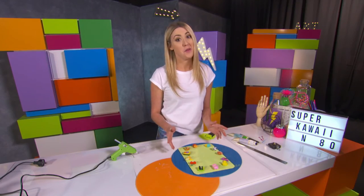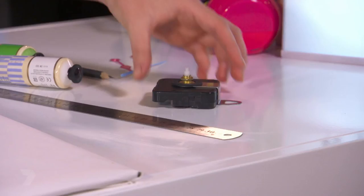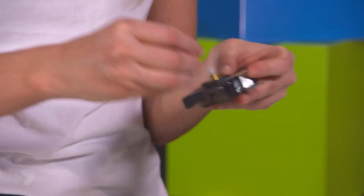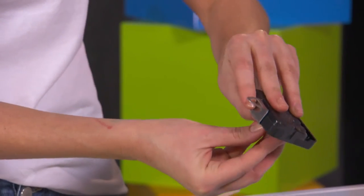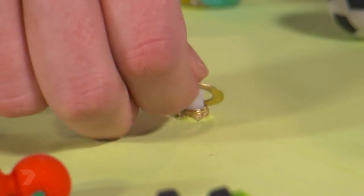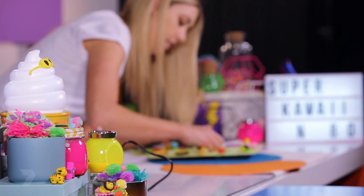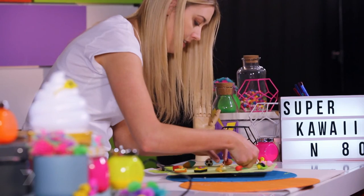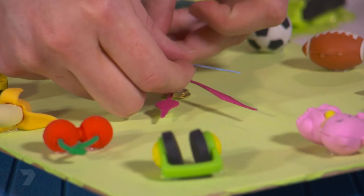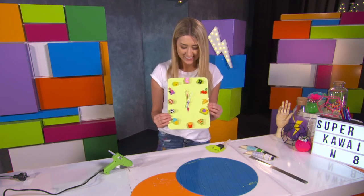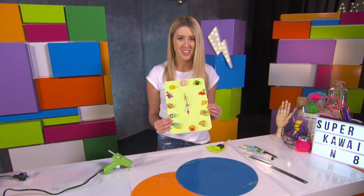Now this glue dries pretty much straight away, so let's get our clock movement in. You might think it would be a hard thing to find but you can get it at nearly any craft store. We'll just screw the nut off, thread it through the back. Time to put the hands on. And there we have my finished clock. Woohoo! Time to clean up.